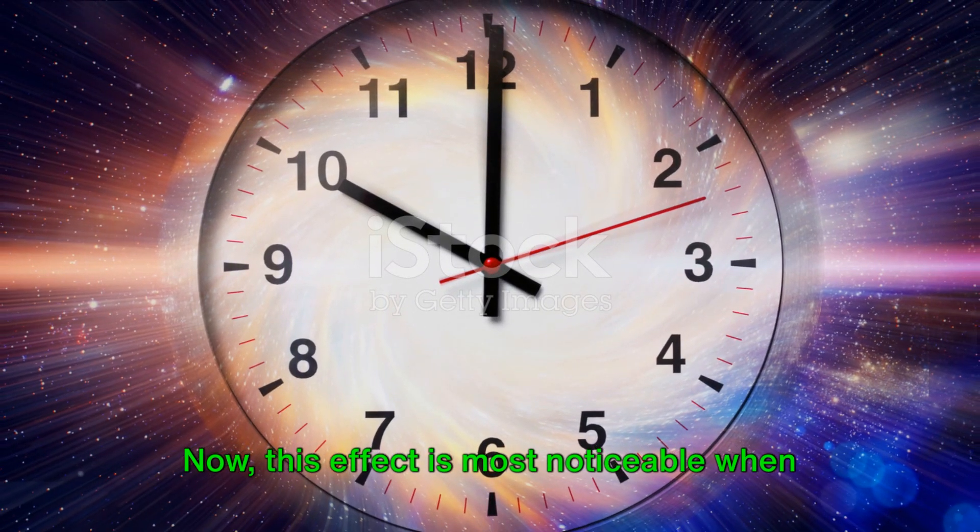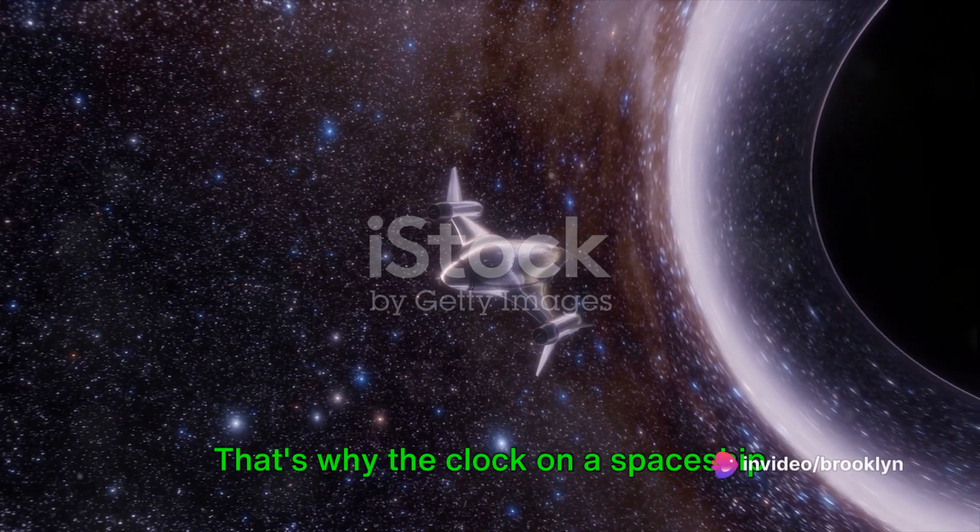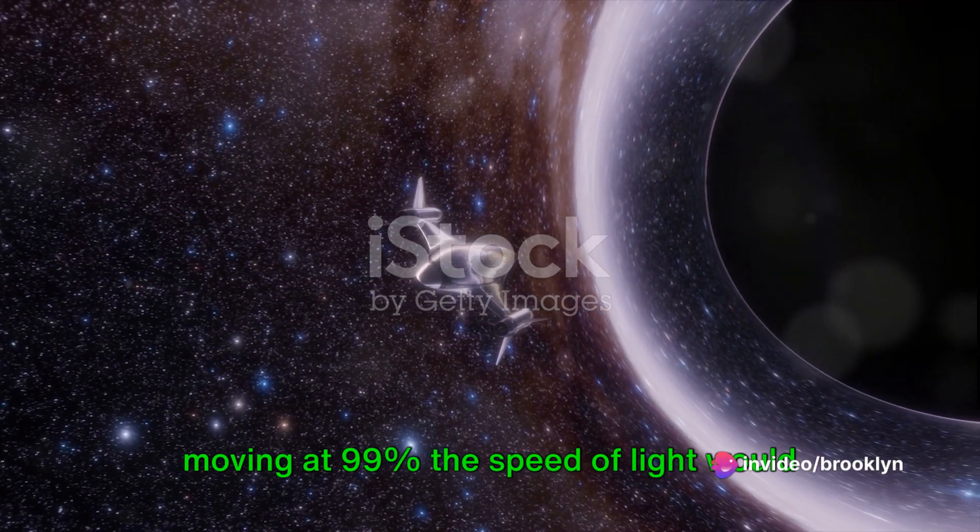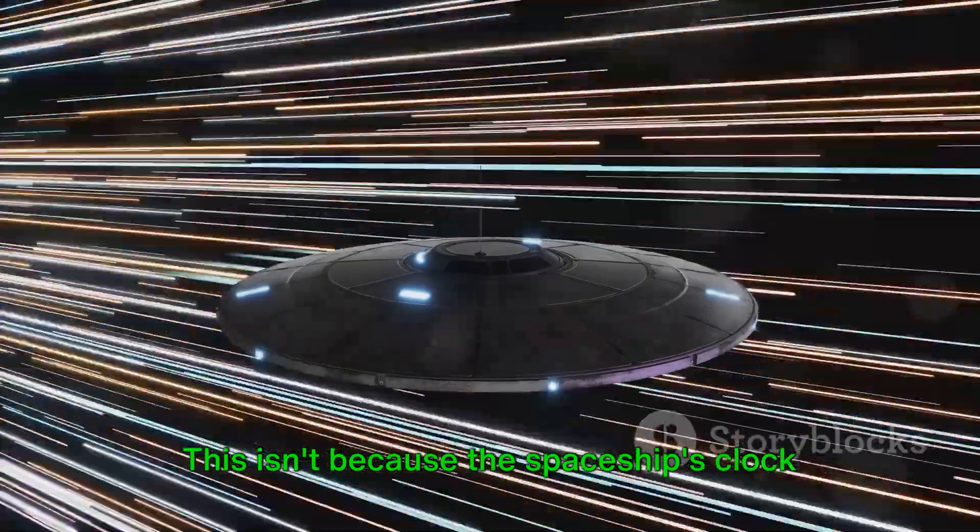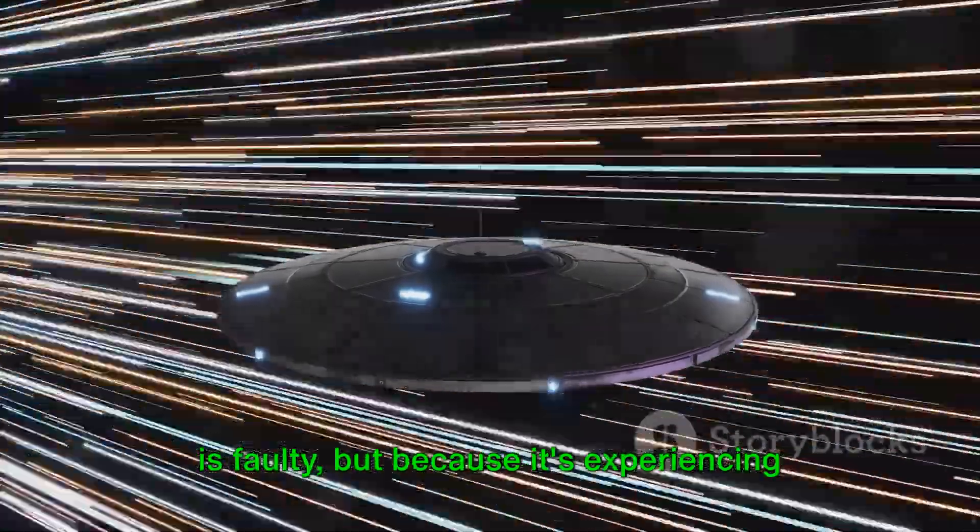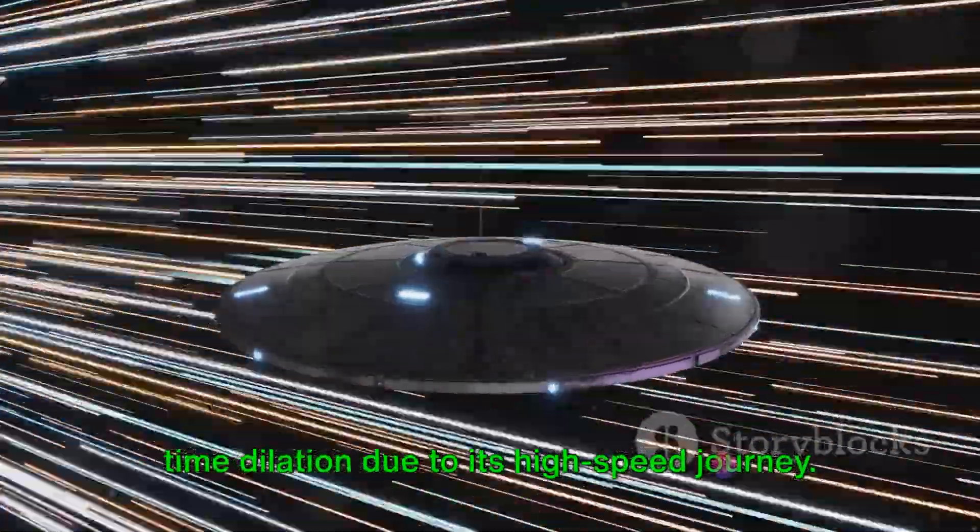This effect is most noticeable when we're dealing with speeds nearing the speed of light. That's why the clock on a spaceship moving at 99% the speed of light would seem to run slower to someone standing on Earth. This isn't because the spaceship's clock is faulty, but because it's experiencing time dilation due to its high-speed journey.